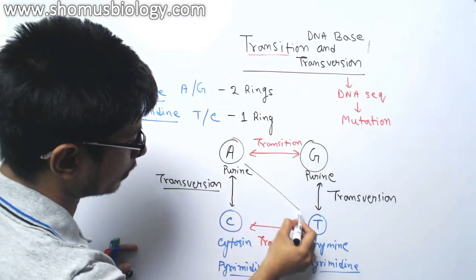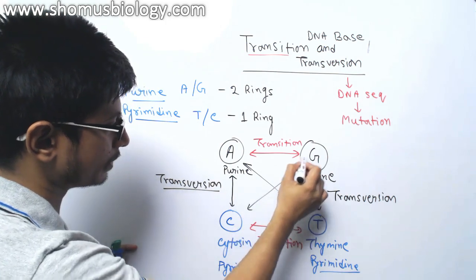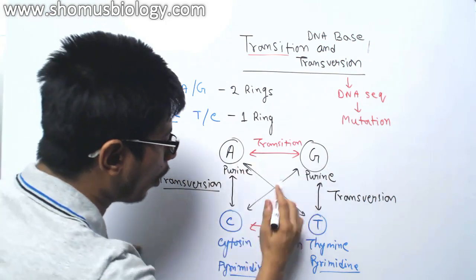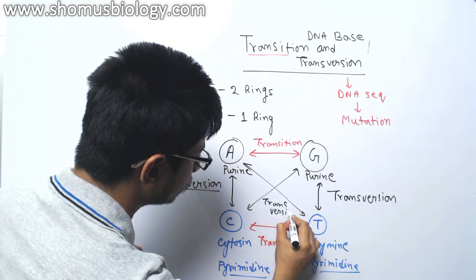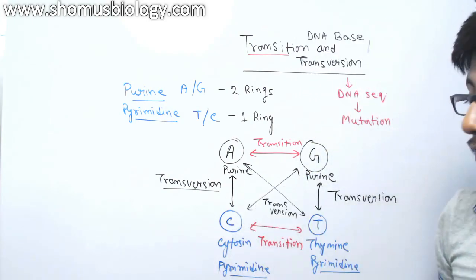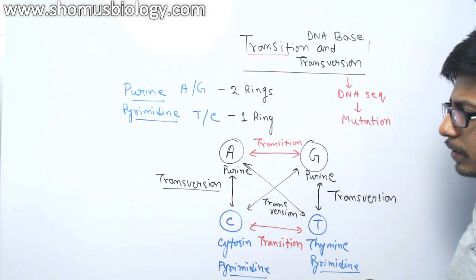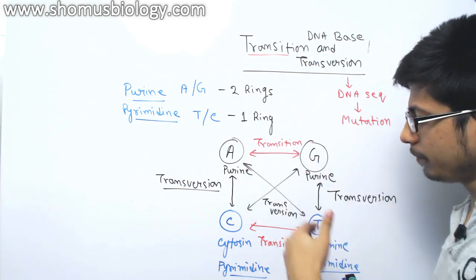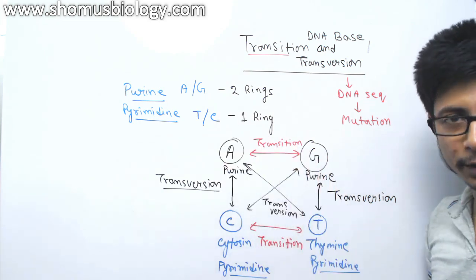And if you look at this criss-cross way, A can also be substituted by T, G can also be substituted by C. So all these are transversion. There are more room for transversion mutations than transition mutations because transition is limited between only purine substituting purine, pyrimidine substituting pyrimidine, but all the other cases will be transversions.